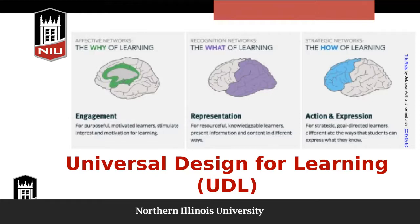What we're going to be looking at first is universal design for learning, which has to do with the why of learning, the what of learning, and the how of learning. The why of learning is engagement for purposeful, motivated learners — you want to stimulate interest and motivation. The what of learning is representation: for resourceful, knowledgeable learners, present information and content in different ways. And the how of learning is action and expression — for strategic, goal-directed learners, you want to differentiate the ways that students can express what they know.